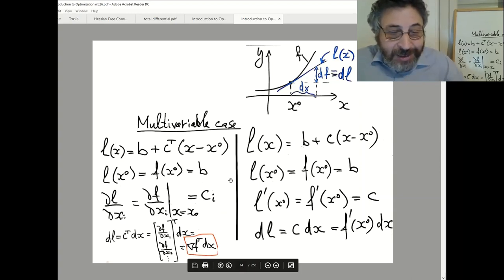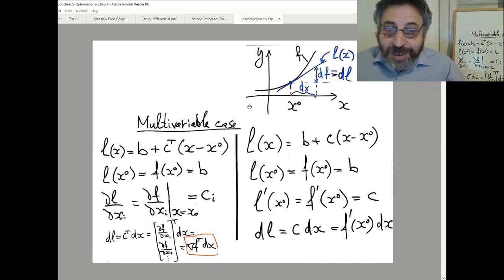So pay attention that in this derivation, we didn't refer to any classical notion of total differential. We get everything inside only from assumptions that our linear function is the best approximation of the original functions, like tangent line. So its partial derivatives are the same as partial derivatives of our original function.